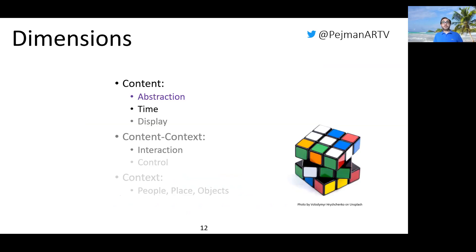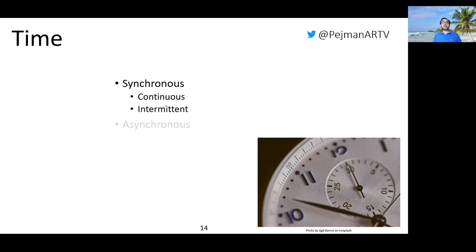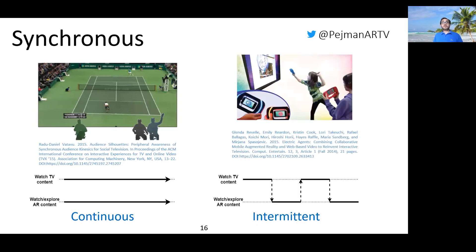Another content-level dimension is time. It captures the relationship between AR content and TV content regarding their timelines. While asynchronous presentation may be suitable for experiences with independent AR and TV components, in most cases it is desirable to have synchrony between the two. Researchers have tried to invent ways to synchronize AR content with TV content, resulting in two ways of delivering content synchronously: continuous and intermittent. Continuous delivery requires both AR and TV content to be presented simultaneously. Ravel et al.'s system required viewers to go back and forth between TV and AR content intermittently.